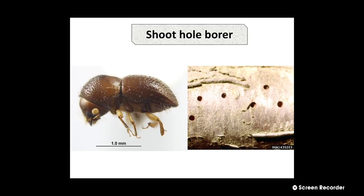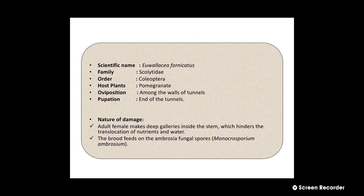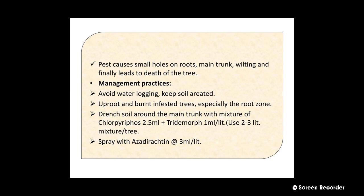Number four is Shoot Hole Borer. In the image we can see the adult of Shoot Hole Borer and the damaging symptoms on a shoot. The scientific name is Euwallacea fornicatus. It belongs to family Scolytidae and order Coleoptera, and the host plant is only pomegranate. Oviposition or site of egg laying is among the walls of tunnels, and pupation takes place at the end of the tunnels. The adult female makes deep galleries inside the stem which hinders translocation of nutrients and water. The brood feeds on the ambrosia fungal spore Monacrosporium ambrosium. This pest causes small holes on the roots and main trunk, wilting, and finally leads to death of the tree.